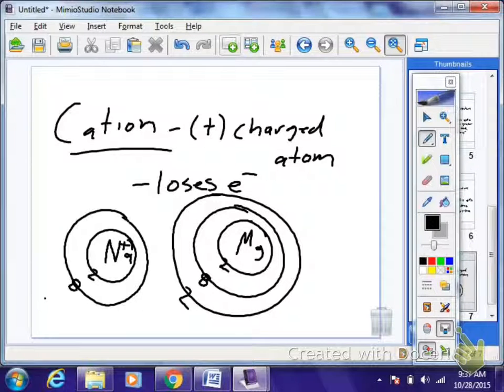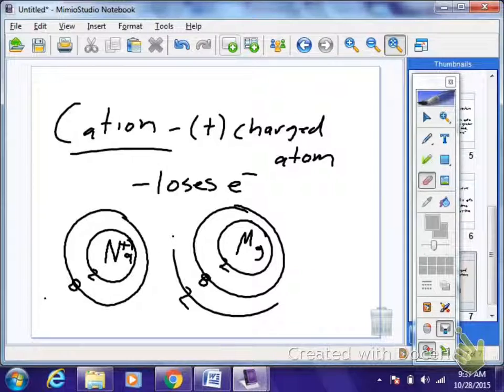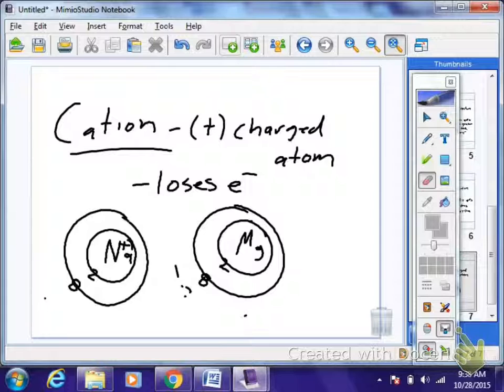Look at magnesium. Monica, what's the charge of magnesium? Element 12. Two. So it loses that whole outer shell. Remember we said outer shells are more important than anything, so it loses that whole outer shell and the atom becomes smaller. Any questions on why metals become smaller in size when compared to the neutral atom?